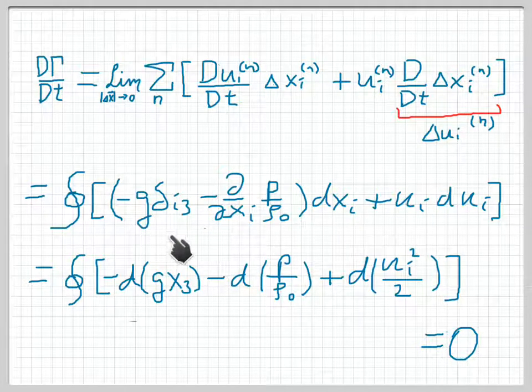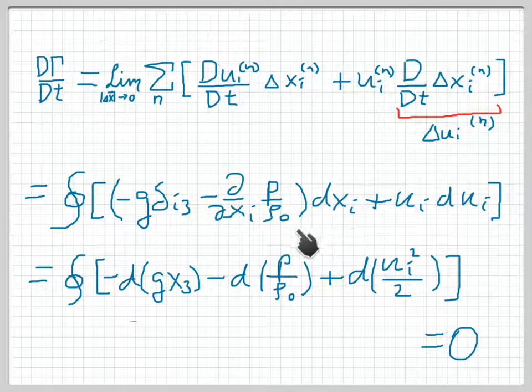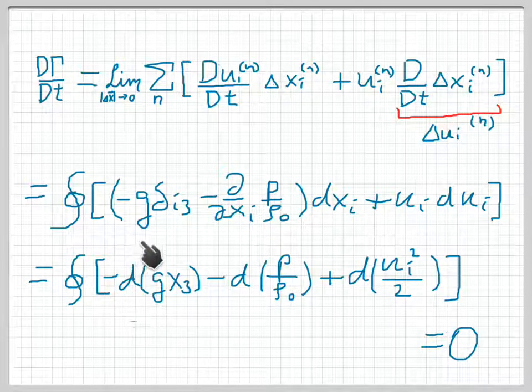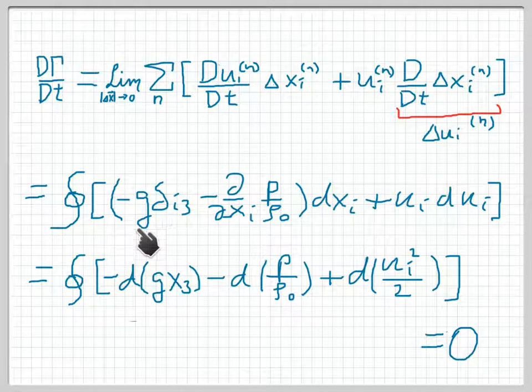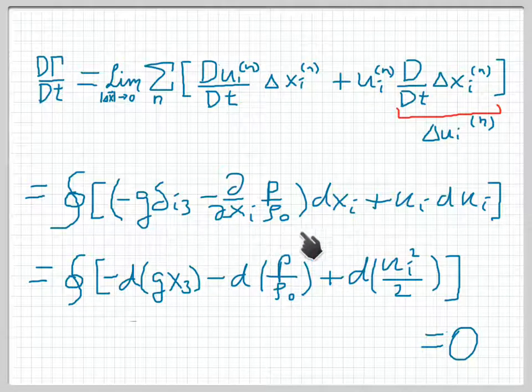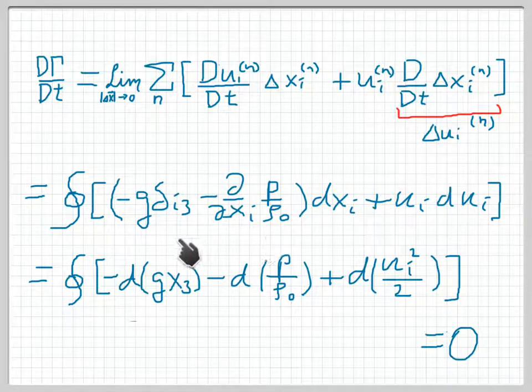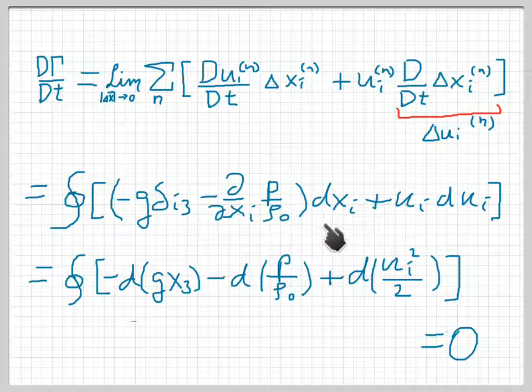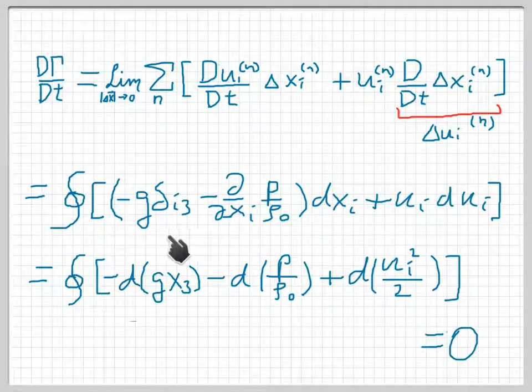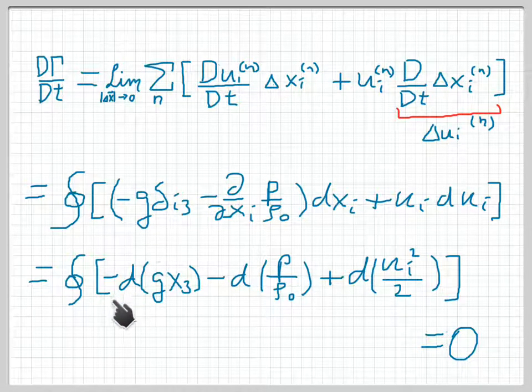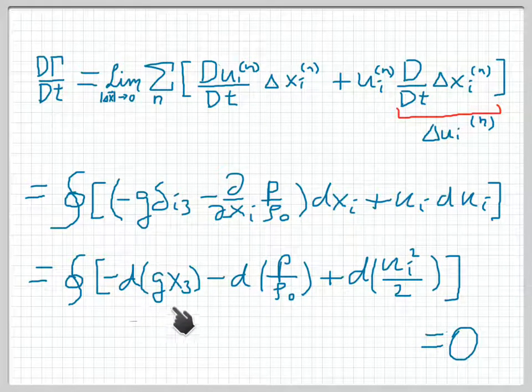Now every term in here is a perfect differential. There are three terms, all perfect differentials. The first one, minus g δi3 dxi, is minus g dx3, and since g is a constant, then this becomes minus d of gx3.